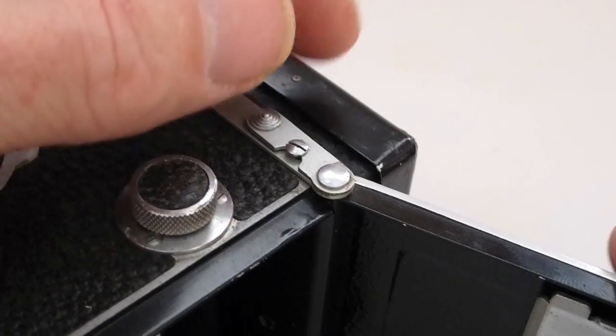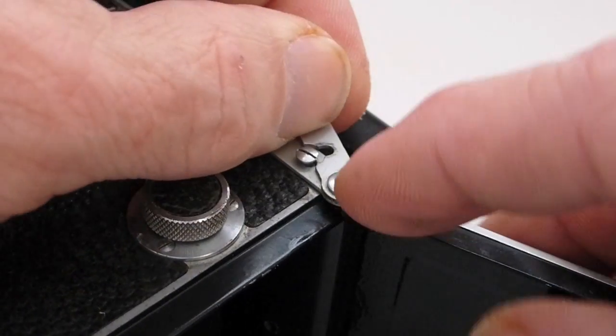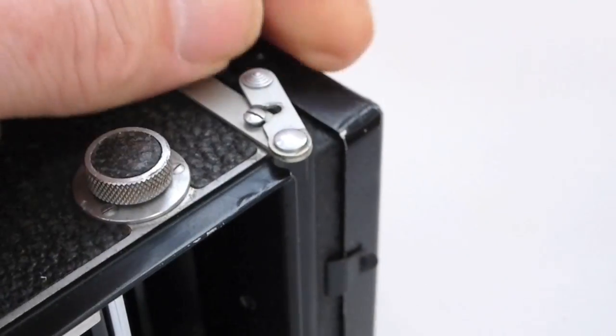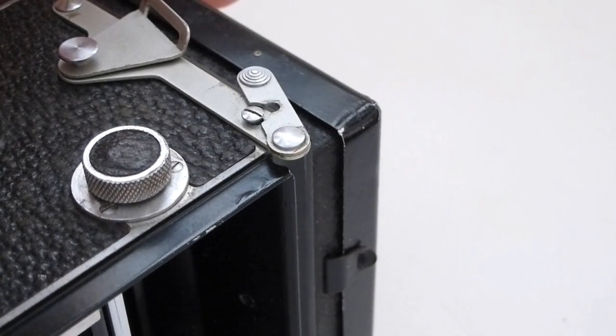On this particular model, the film door can be easily removed. This will help to facilitate access to the inner lens group.